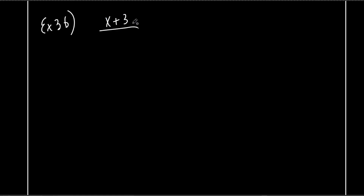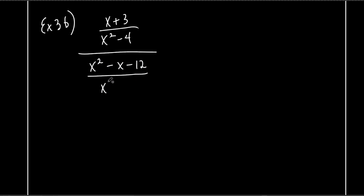Let's do Example 3b — a division problem. The problem is (x + 3)/(x² - 4) divided by a complex expression. The first thing I do when I see division of fractions: keep-change-flip. Keep the first fraction, change division to multiplication, and flip the second fraction. I do that before factoring anything. So let's keep-change-flip first.